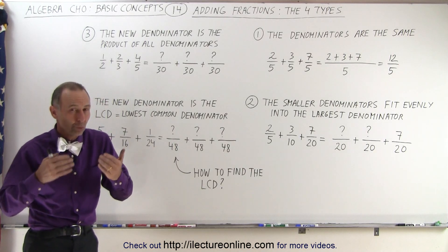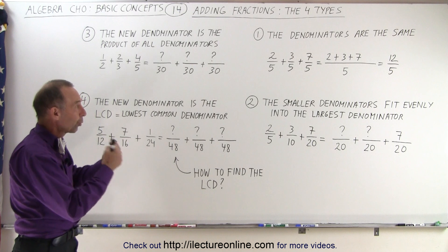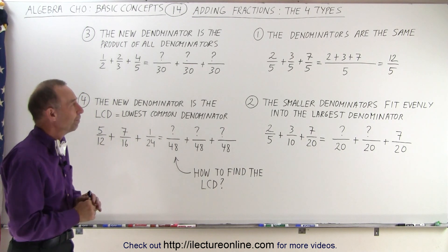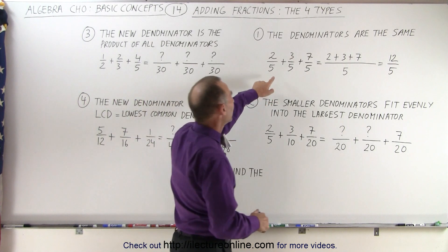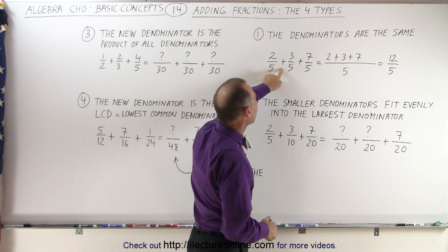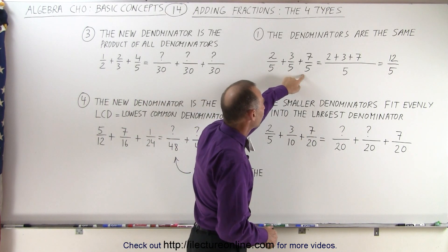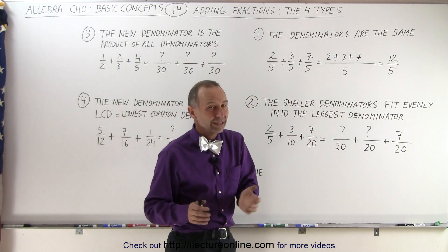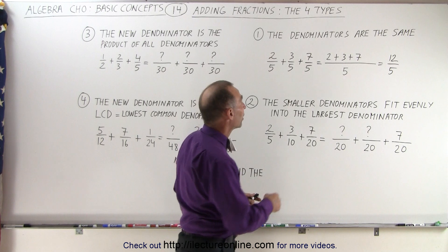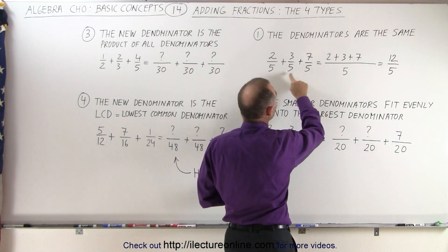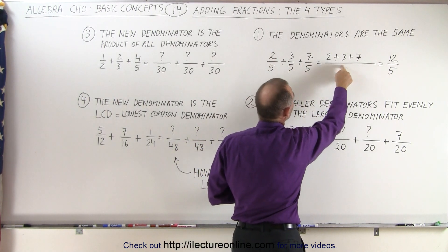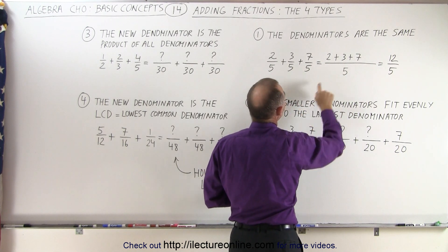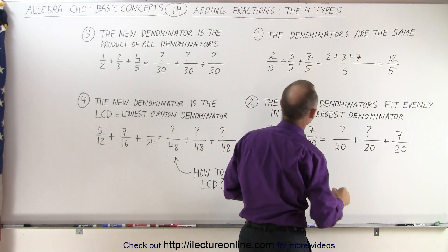Now we're going to show you one by one how to work these types out, but first let's understand them a little bit more. Here we have an example with three fractions that we're adding. Notice that the denominator in each of the three fractions is exactly the same. If that is the case, then summing them up is quite easy because you're going to write all the numerators over the one common denominator, which is the same as the denominator found in all three.